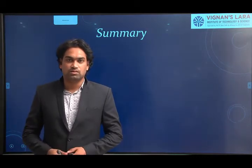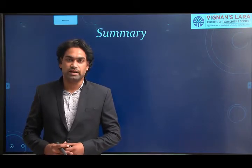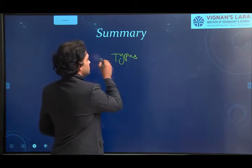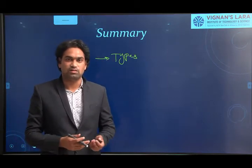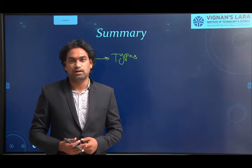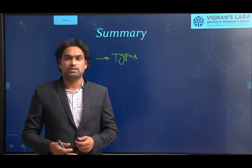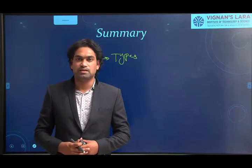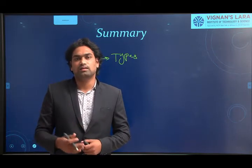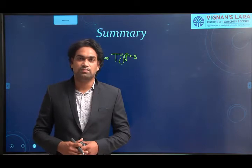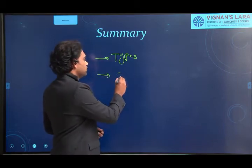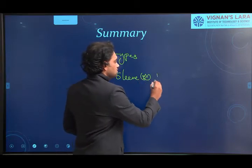In today's class we discussed the various types of sliding contact bearings — the classification based on the type of load acting and the motion path: if straight-line motion, we call it plane or slipper bearings; if circumferential motion, sleeve or plane bearings. Depending on load type: radial bearings or thrust bearings. We also saw the different types under radial and thrust bearings. The main thing to remember is the sleeve-type bearing, also called journal bearing.